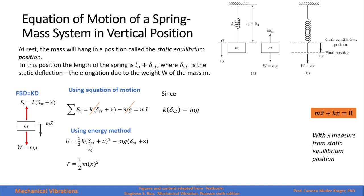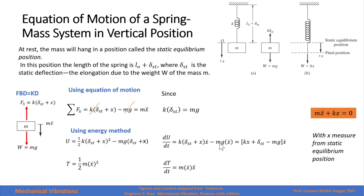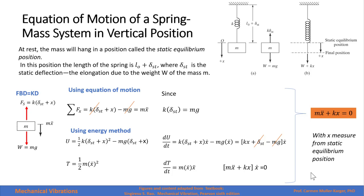Using energy methods, the potential energy of the spring is one-half k times (static deflection plus x) squared, minus the weight times the displacement downward. The kinetic energy is one-half m times x-dot squared. Differentiating with respect to time using the chain rule, the static deflection term is constant so its derivative is zero. Extracting the common velocity factor, the bracket must equal zero — and we get exactly the same equation of motion as from Newton's law.